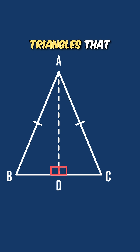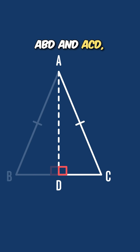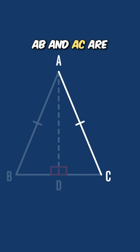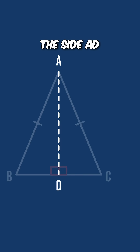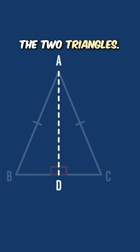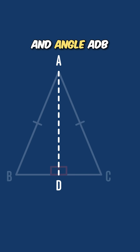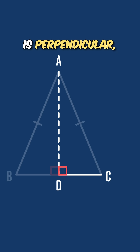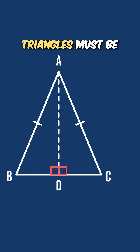So the two triangles we've created, ABD and ACD, are congruent. That's because the side lengths AB and AC are equal, as they are the equal sides of the isosceles triangle. The side AD is shared between the two triangles — literally the same line segment. And angle ADB and angle ADC are both 90 degrees, because line AD is perpendicular, i.e. at right angles, to BC.